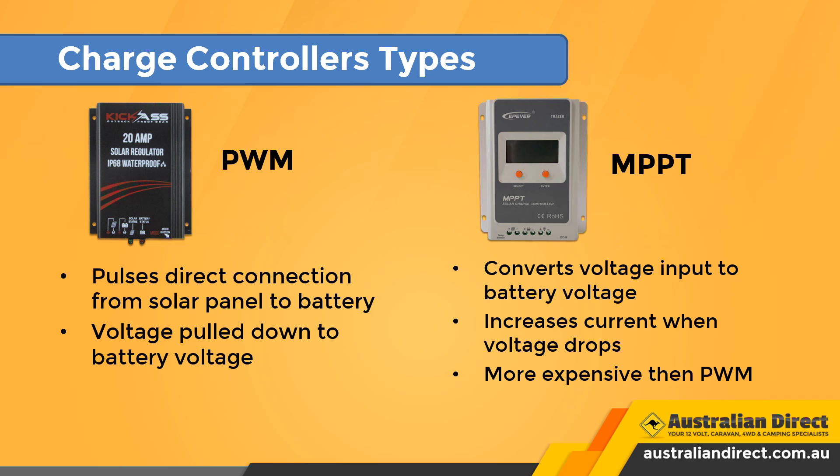MPPT charge controllers measure the VMP voltage of the panel and down-convert the PV voltage to the battery voltage. Because power in equals power out, when the voltage is dropped to match the battery bank, the current is raised. So you are using more of the available power from the panel.